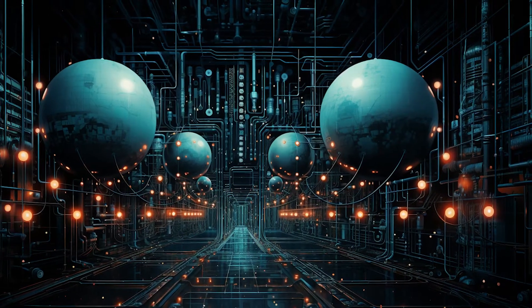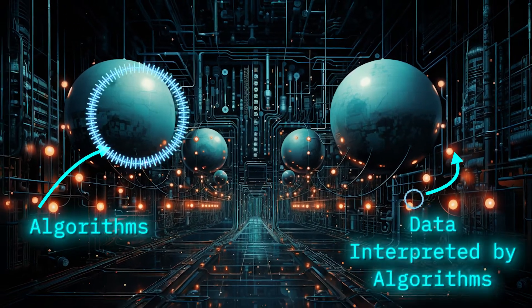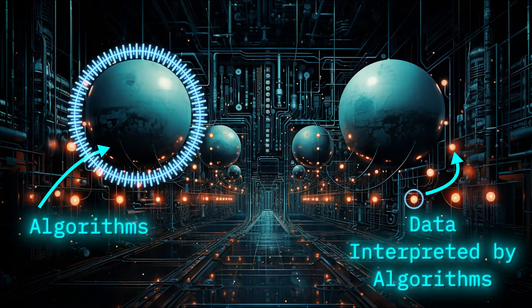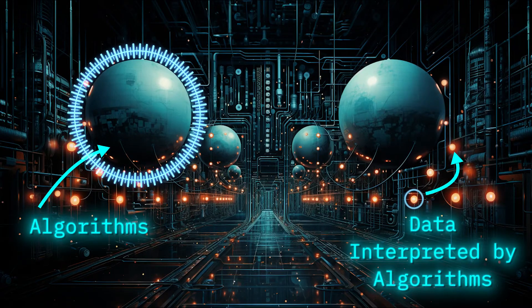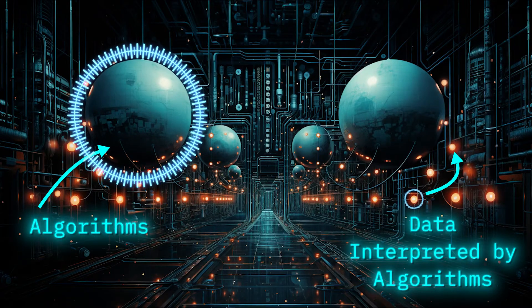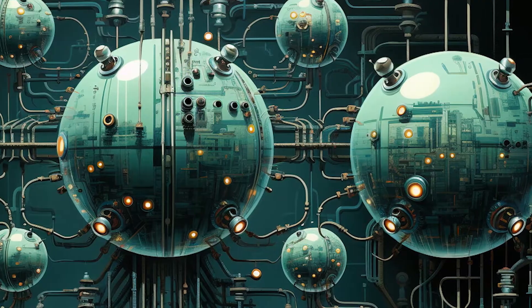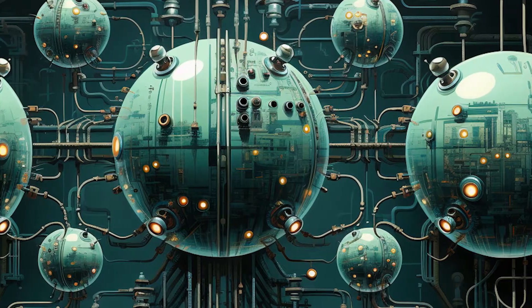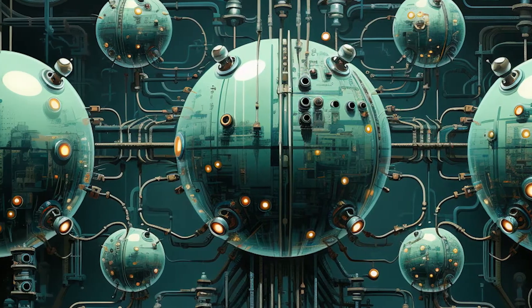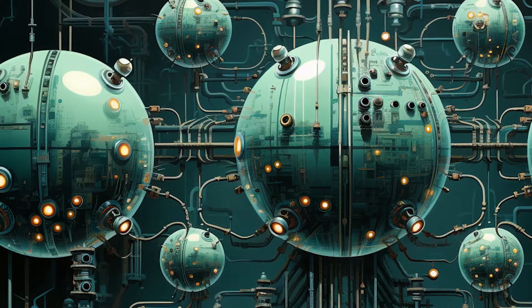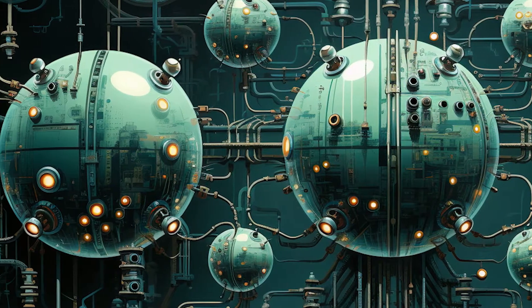If you want to think of AI as a big group of algorithms, there's a subset of these algorithms that are called machine learning models. An algorithm is just a set of steps that a computer needs to follow. A learning algorithm is an algorithm that allows us to develop a machine learning model.